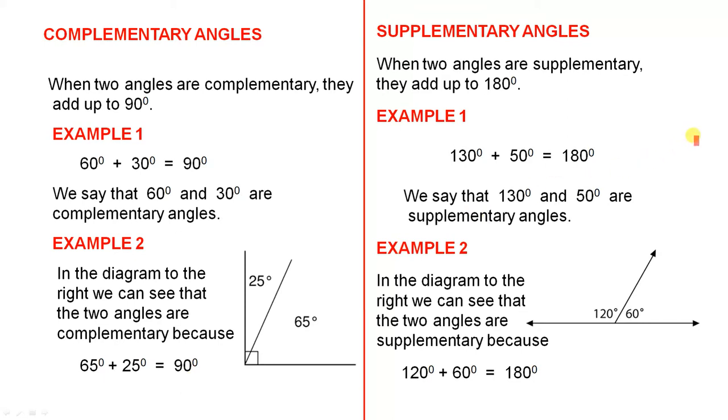Supplementary Angles. When two angles are supplementary, they add up to 180 degrees. Example 1: 130 degrees plus 50 degrees equals 180 degrees. We say that 130 degrees and 50 degrees are supplementary angles, and the reason is they add up to 180 degrees.